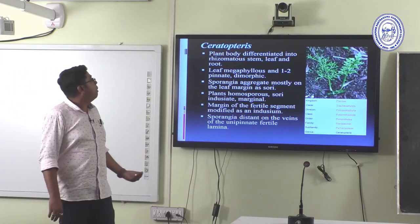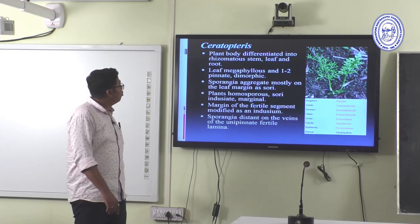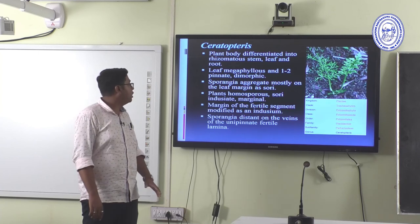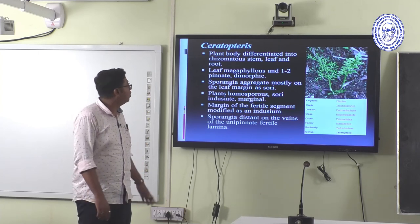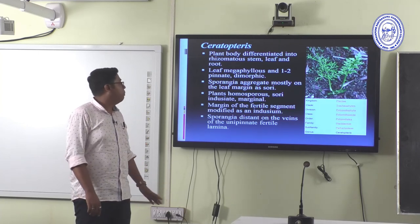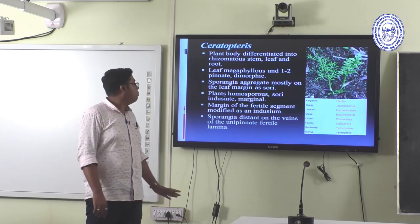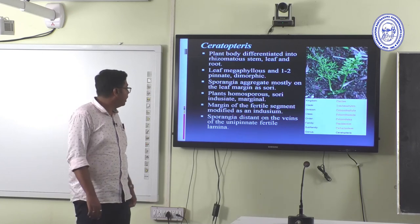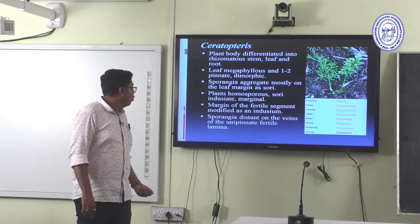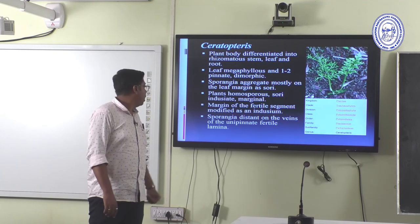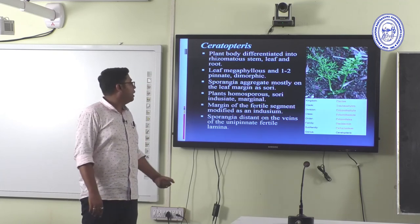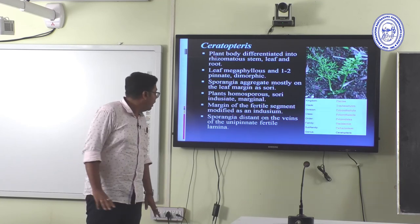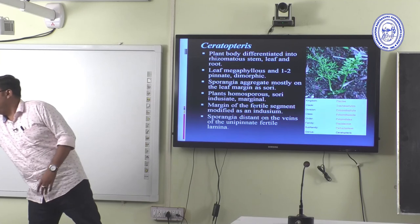Ceratopteris: the plant body is differentiated into rhizomatous stem, leaf, and root. Leaves are dimorphic megaphyllous and 1 to 2 pinnate. Dimorphic sporangia are aggregated mostly on the leaf margin as sori. The plant is homosporous. The indusium is marginal — the margin of the fertile segment is modified as an indusium, and sporangia are distinct on the veins of the unipinnate fertile lamina.